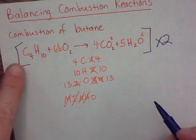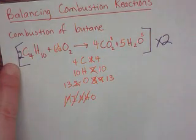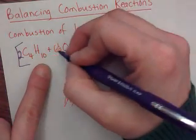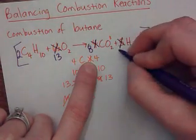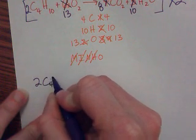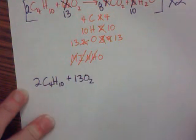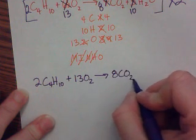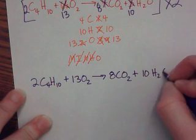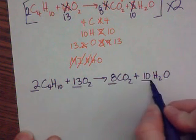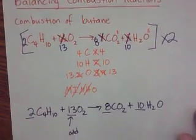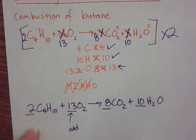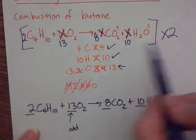If we double everything: the invisible one in front of butane becomes two; the six and a half becomes thirteen; the four becomes eight; and the five becomes ten. The final balanced equation has coefficients of two for butane, thirteen for oxygen, eight for carbon dioxide, and ten for water. We have one odd number — thirteen — and everything else is even because we doubled it all. The strategy: fix carbon, fix hydrogen, and if you get an odd number, that's when you do the 'bend the Matrix' trick and double everything to eliminate the fraction.